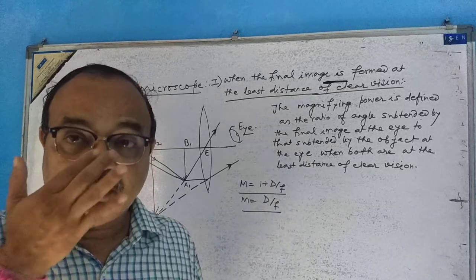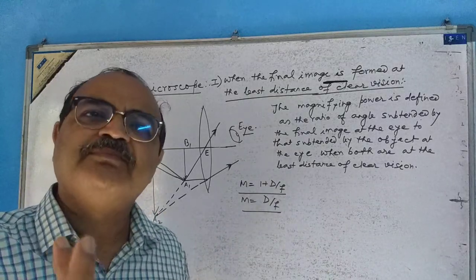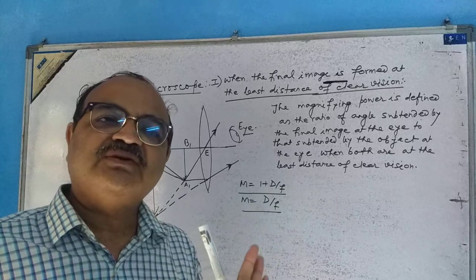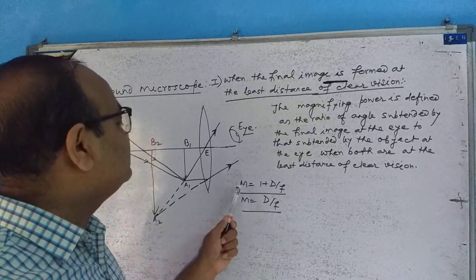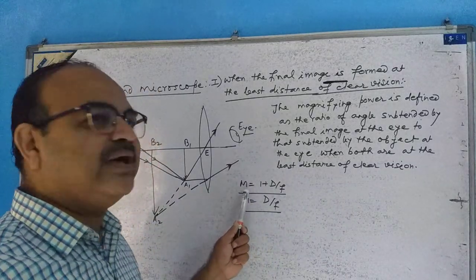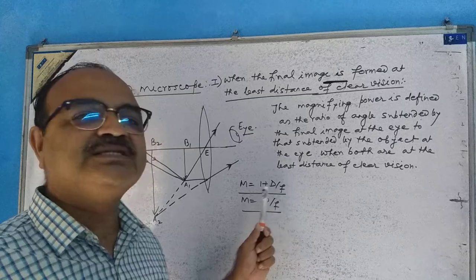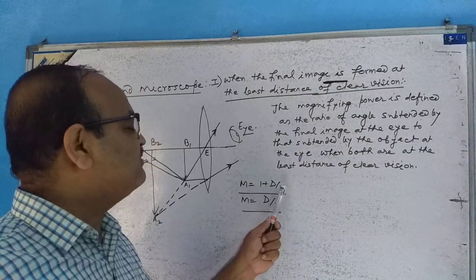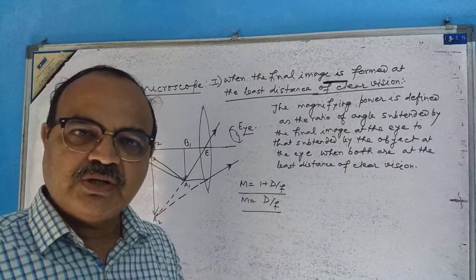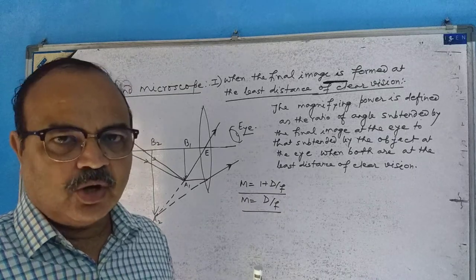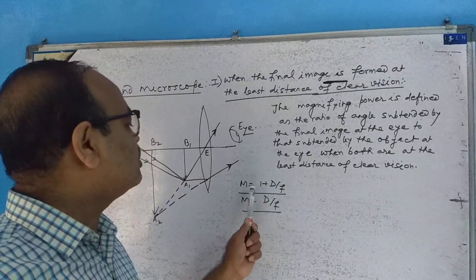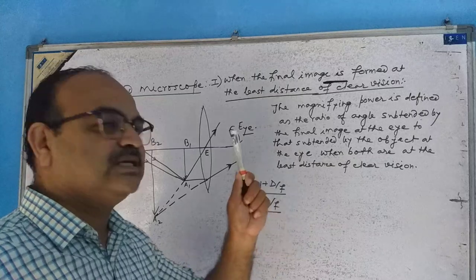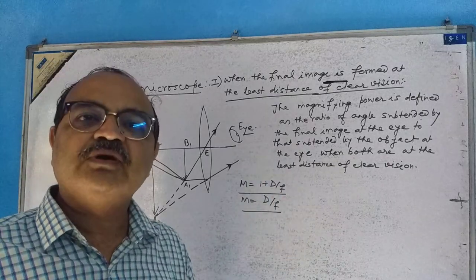D is also a constant — it is 25 centimeters, as I have told you repeatedly. So only F is the variable. In order to increase the magnifying power, we have to decrease the value of F. We have to decrease the value of small f. That we have already said: in order to increase the magnifying power, we have to decrease the value of small f.